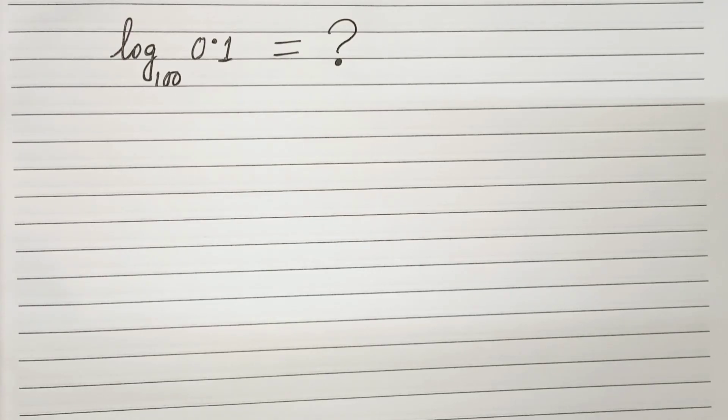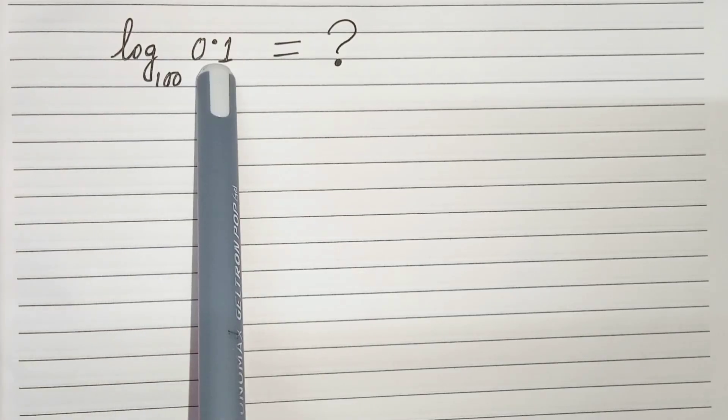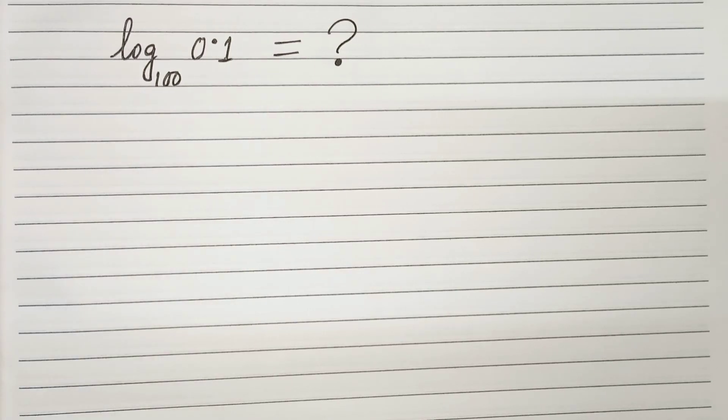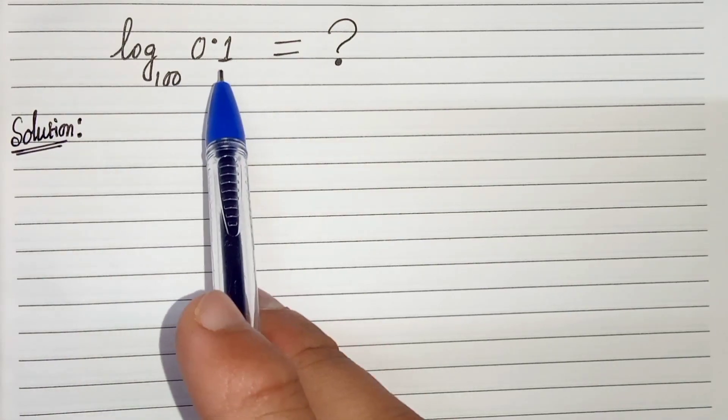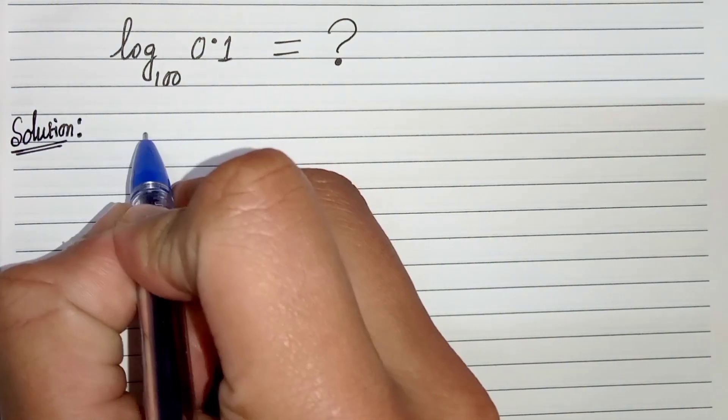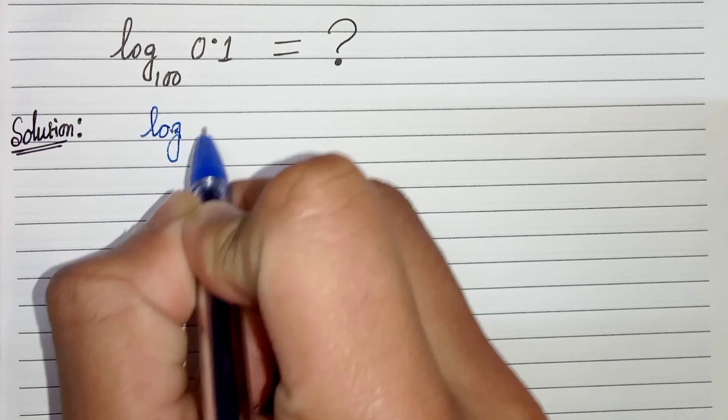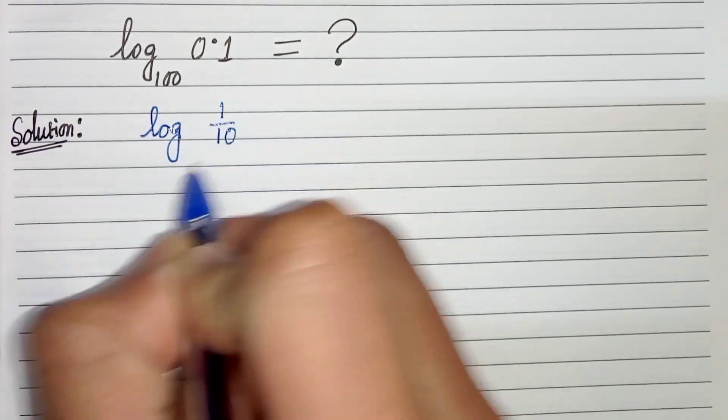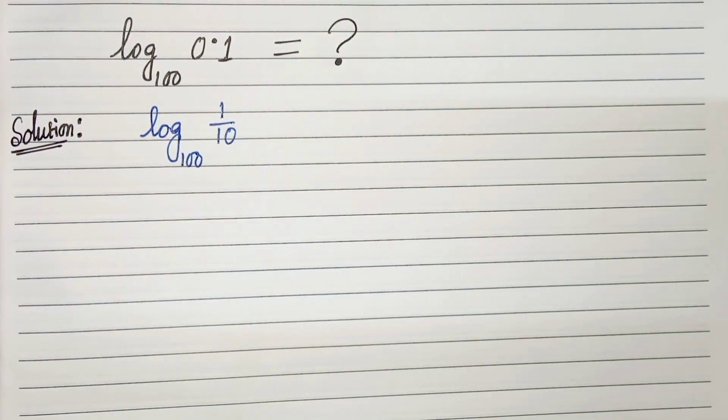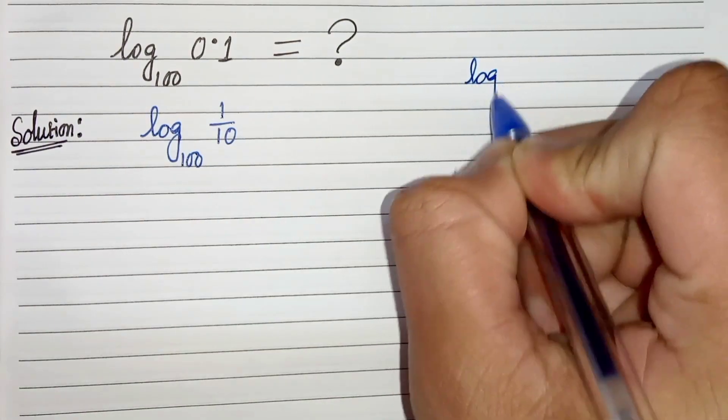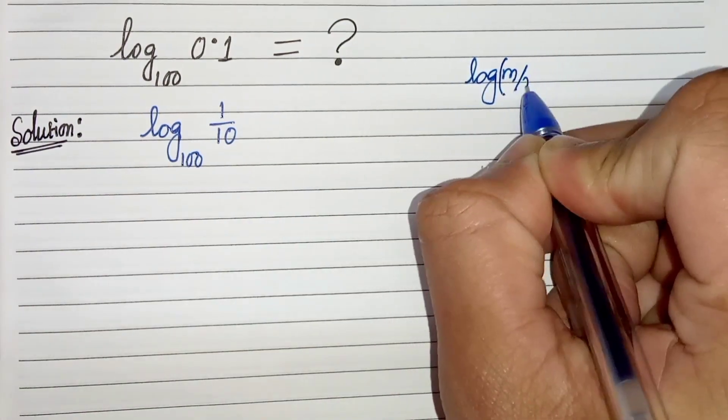Hello everyone, in this video we have to evaluate log of 0.1 with the base as hundred. So let's start. First of all, let's write 0.1 as 1 by 10, and we know that log of m divided by n can be written as log of m minus log of n.